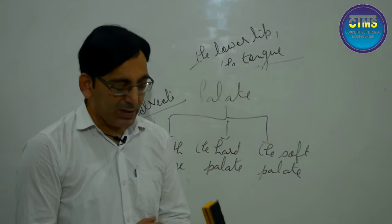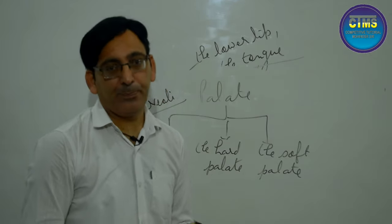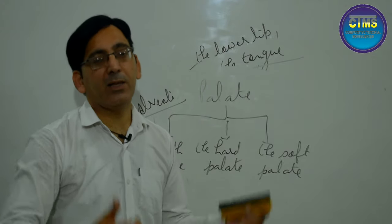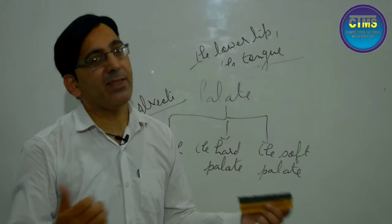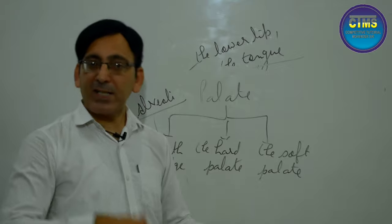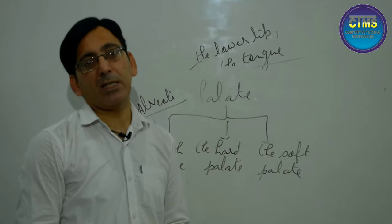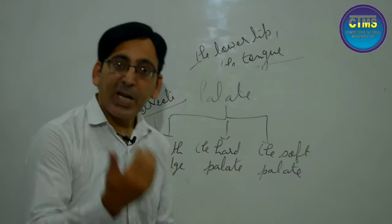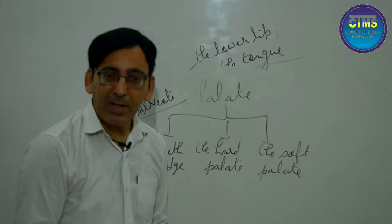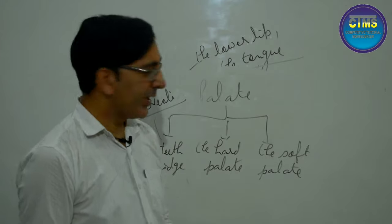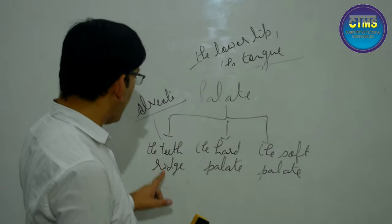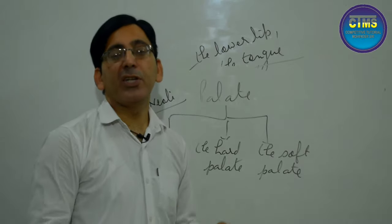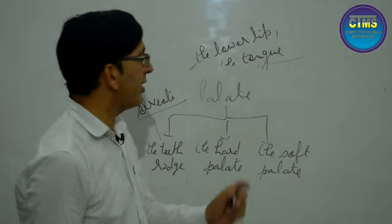So our active articulators are the lower lip, the tip, the blade, the front, and the back of the tongue. Our passive articulators are the upper lip, the teeth, the alveoli or teeth ridge, the hard palate, and the soft palate.